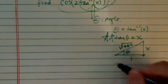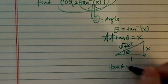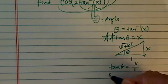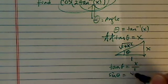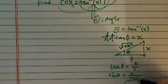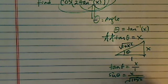And from here, tangent theta equals x over 1, sine theta equals x over radical of 1 plus x squared, and cosine of theta equals 1 over radical of 1 plus x squared.